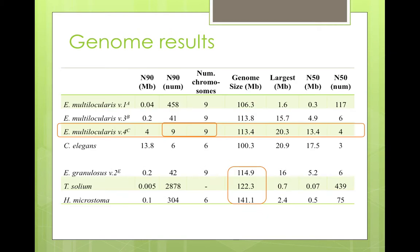The final genome — the best one — is of Echinococcus multilocularis, for which, as you can see, the statistics are strikingly similar to the genome of C. elegans. More than 90% of the genome is in 9 contigs, which also happens to be the number of chromosomes they have.